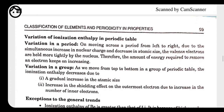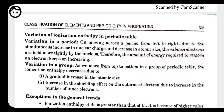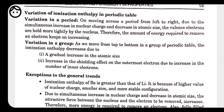Variation of ionization enthalpy in period and group: In a period, moving from left to right, size decreases, so nuclear attraction increases, and therefore ionization enthalpy increases — it is inversely proportional to size. In a group, moving from top to bottom, size increases, and as size increases, ionization enthalpy decreases.